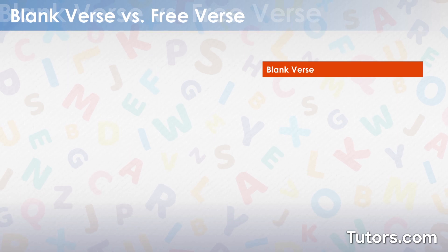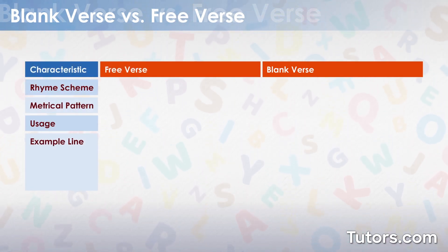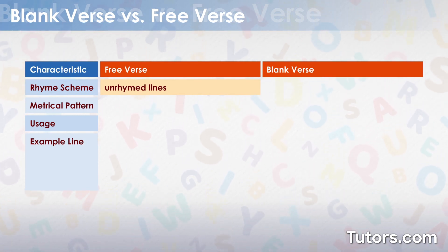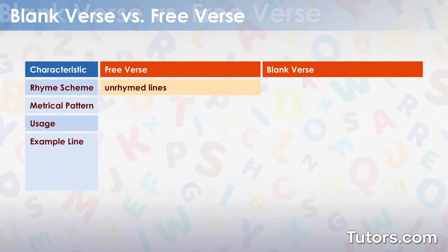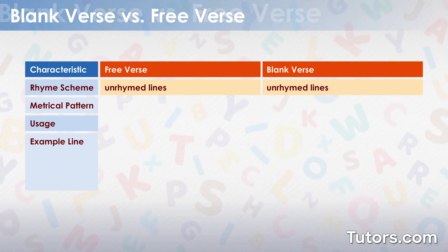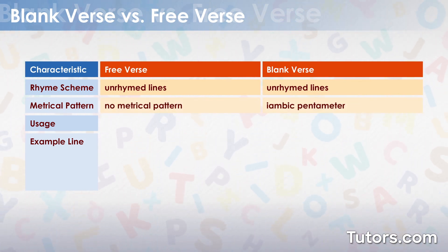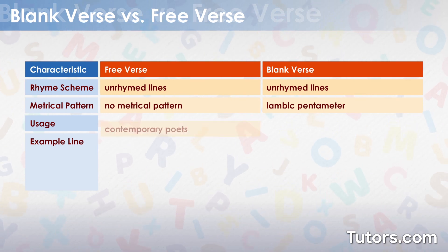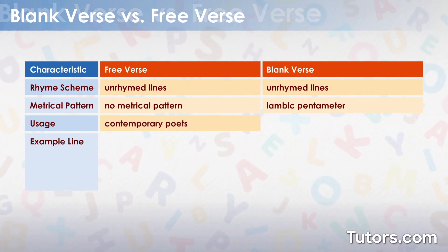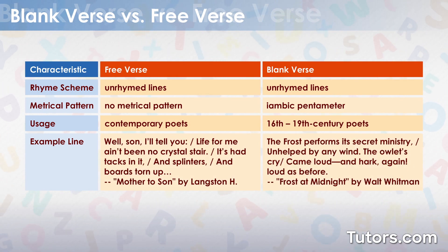Blank verse and free verse differ in these ways. Free verse has unrhymed lines and no metrical pattern. Blank verse also has unrhymed lines but must be in iambic pentameter. Free verse is popular among contemporary poets, while blank verse was mostly written in the 16th and 17th centuries.